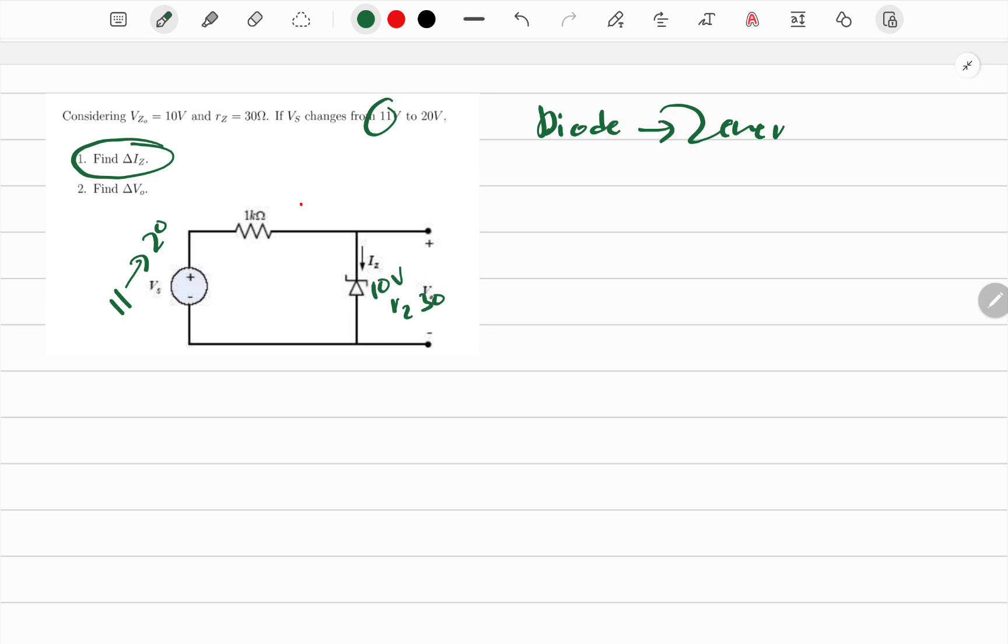So I think first we have to find the current if it was at 11. For if Vs equals 11, let me just make that an initial case. So I think we'll have some voltage that you are supplied with which is 11 minus 1000, this is KVL that I'm doing, minus 1000 of that current initially, minus voltage drop by that Zener diode which is this much.